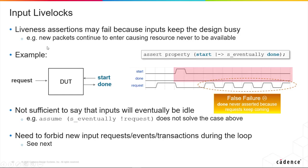With liveness assertions, another common reason for false negatives is that inputs are always keeping the design doing something or stopping the design from doing something. For example, new packets continue to enter, causing whatever resource was not available to still not be available. Remember, the tool is trying to find any way it can in order to prove your assertion fails.